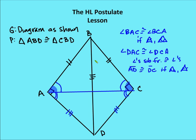Then I'm going to say that angle DAC is congruent to angle DCA. Not for the same reason — I'm going to subtract. I know that angle BAD is a right angle and angle BCD is a right angle. I know that BAC and BCA are congruent. So if I subtract congruent angles from congruent right angles, then their differences are going to be congruent. The differences in this case are angles DAC and angle DCA, so these two angles are going to be congruent.